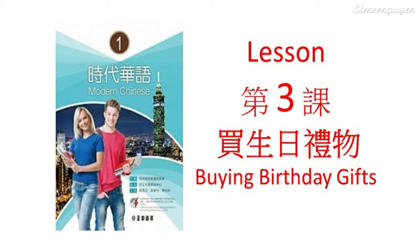语法二。形容词 + 的 + 名词。便宜的东西。1. 他是一个快乐的孩子。2. 李太太有三个可爱的孩子。3. 我喜欢漂亮的花。新书。1. 你有几个好朋友？2. 我要买一个小蛋糕。3. 他是我们的新同学。